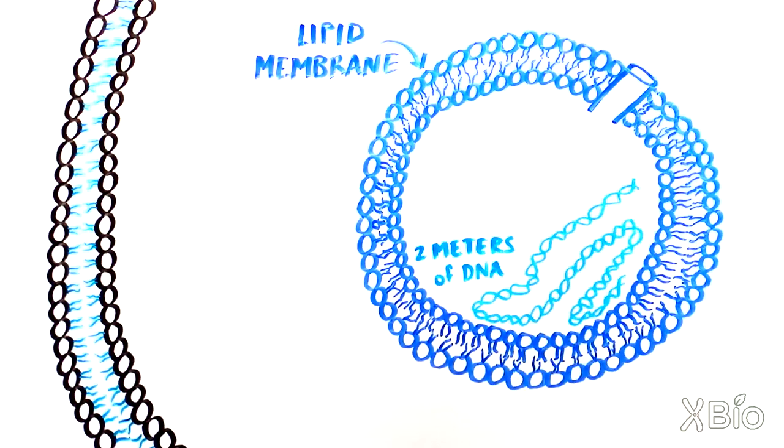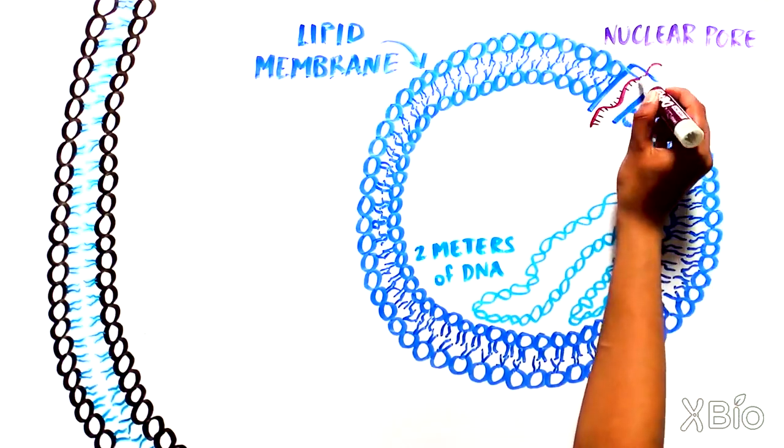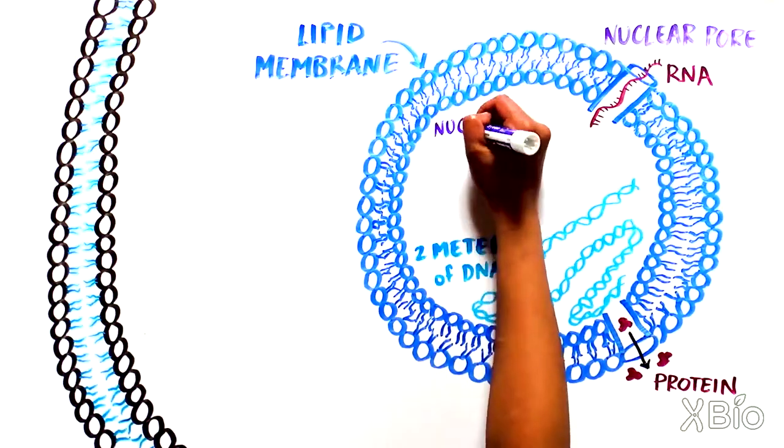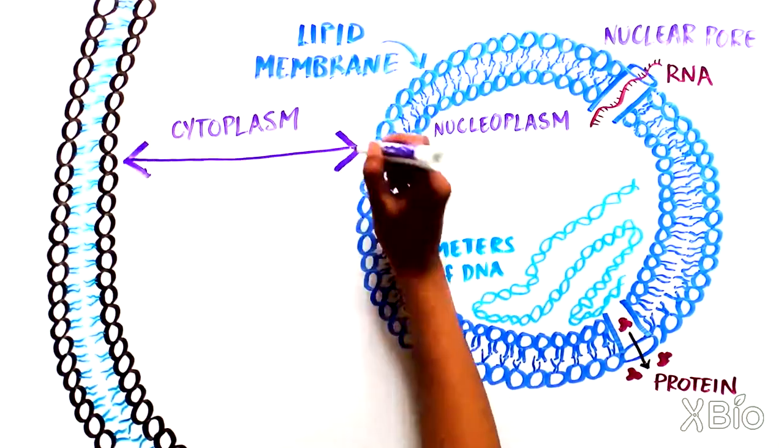However, it has relatively big pores, called nuclear pores, that allow RNAs and some proteins to pass between the inside, the nucleoplasm, and the outside, the cytoplasm.